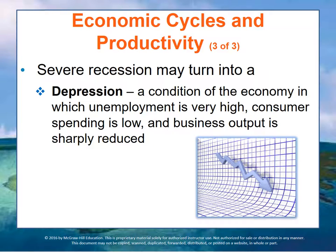A very severe recession can turn into a depression, in which unemployment is very high, consumer spending is low and stays low, and business output is reduced. This can bring prices down further, creating what's called a deflationary spiral.